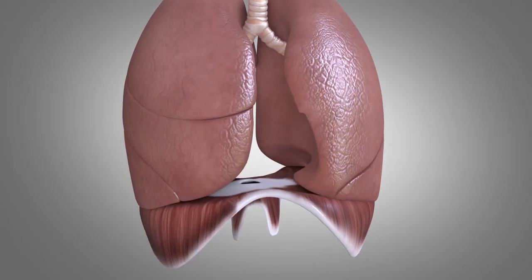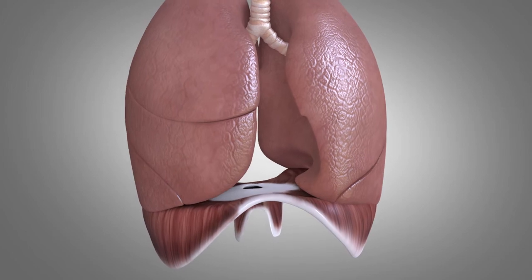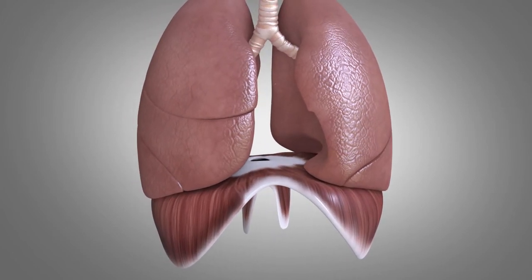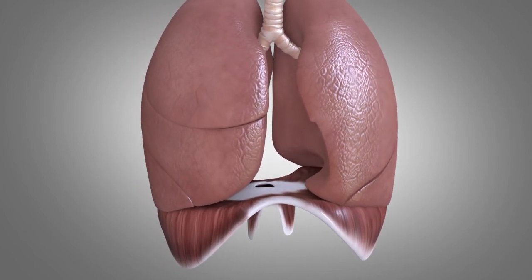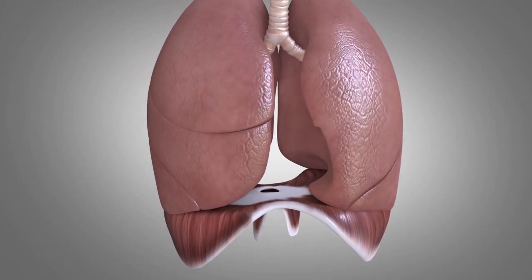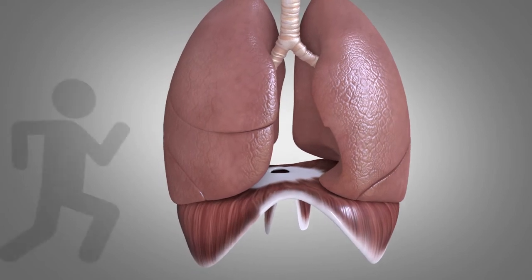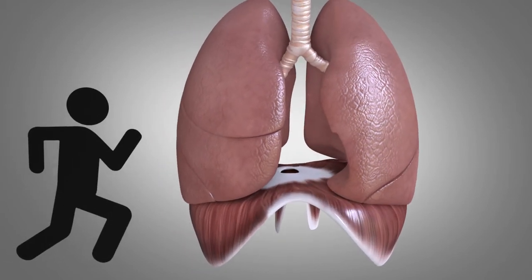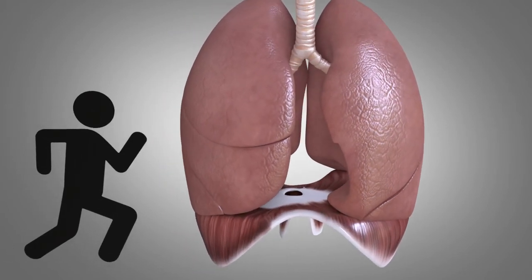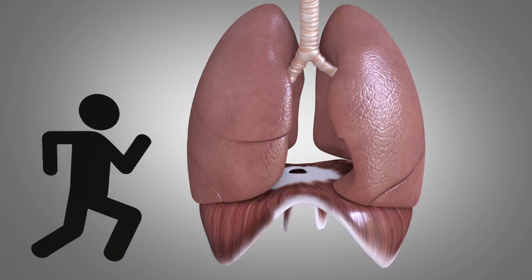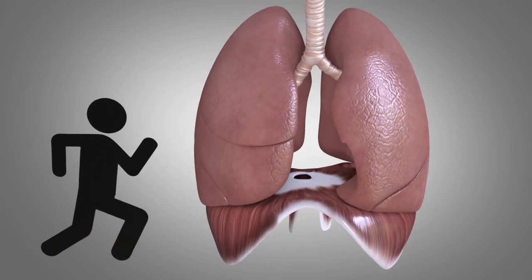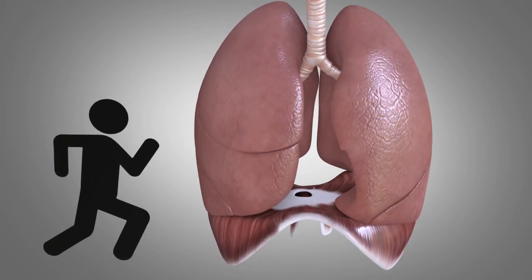Expiration is a comparatively passive process, driven by elastic recoil within the lungs and diaphragm, though when ventilation is increased, for example during exercise, the intercostal and abdominal muscles also contribute. The resting position for the lung is at the end of expiration.